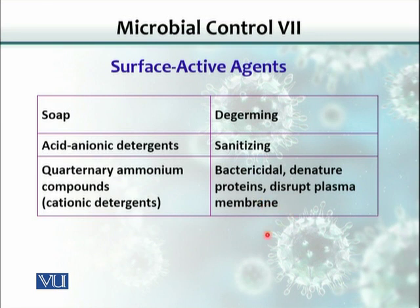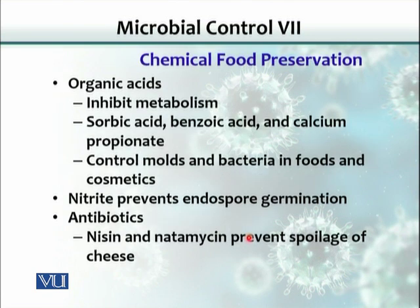All enzymes in bacteria and microbes are proteins. If they are denatured, enzymes would not work and the bacteria or microbes would not be able to grow. Quaternary ammonium also disrupts the plasma membrane, and if the plasma membrane is damaged, the integrity of the cell is compromised and the cell won't survive. Sometimes we also use chemicals for the preservation of food, and they inhibit metabolism.